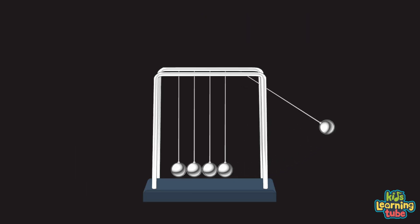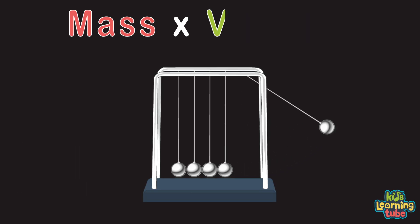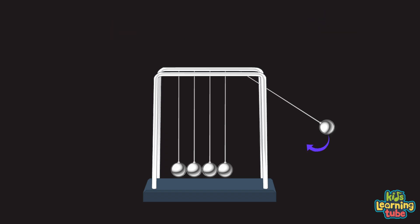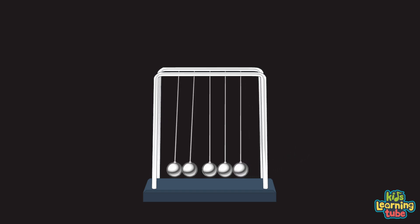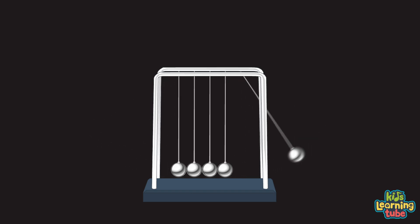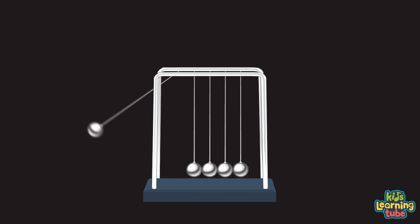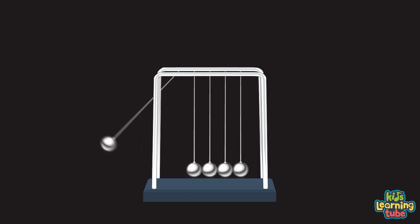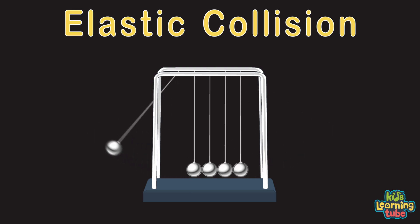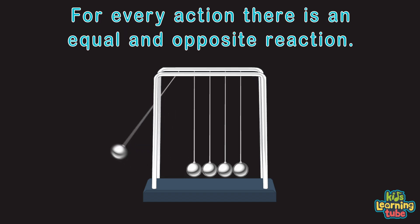When we let the first sphere go, its mass times velocity charges forward. When it impacts the next sphere, the momentum transfer takes charge. Momentum is passed through the middle spheres and passed on to the final one. Because the spheres have the same mass and their velocity is equal to the first sphere that impacted the middle three spheres, this is known as elastic collision — there's no loss in kinetic energy here.